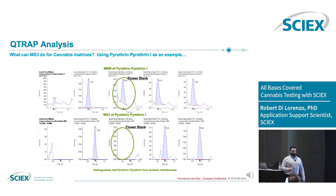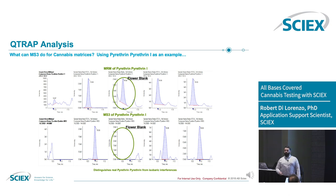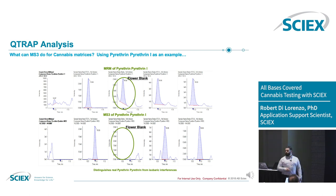Pyrethrins are one of the most difficult analytes to analyze in cannabis because there's a huge amount of matrix interferences on basically all of the MRM channels. Anytime you see a pyrethrin hit in your cannabis samples, double check it and triple check it — probably run it orthogonally on a different column. But what you can also do is use MRM cubed to completely cut out the background. Instead of running something twice, you can run it once with MRM cubed.